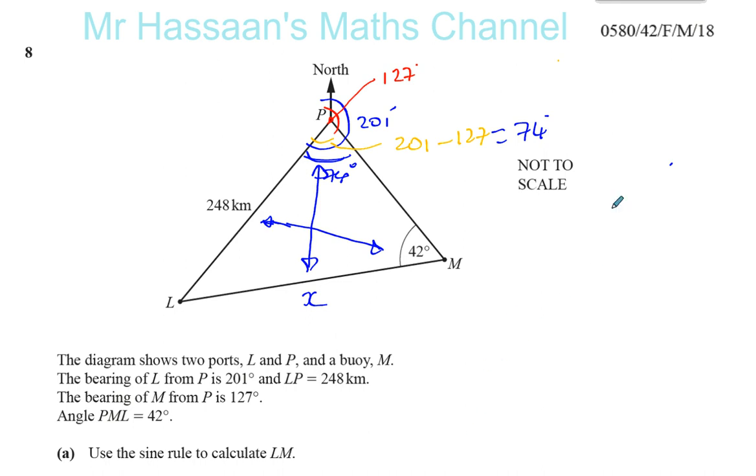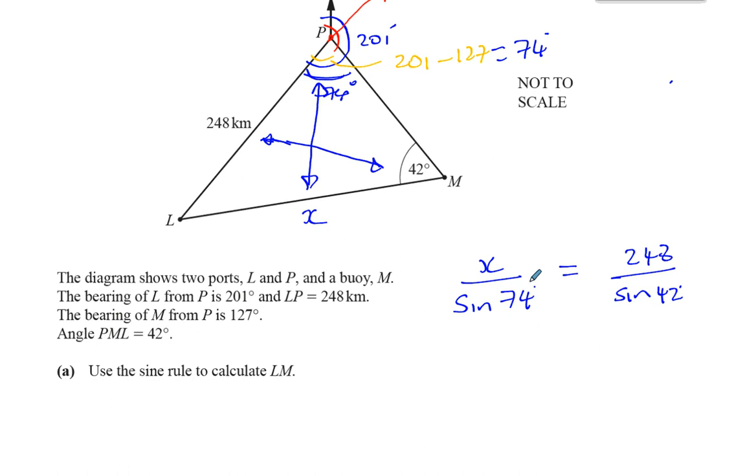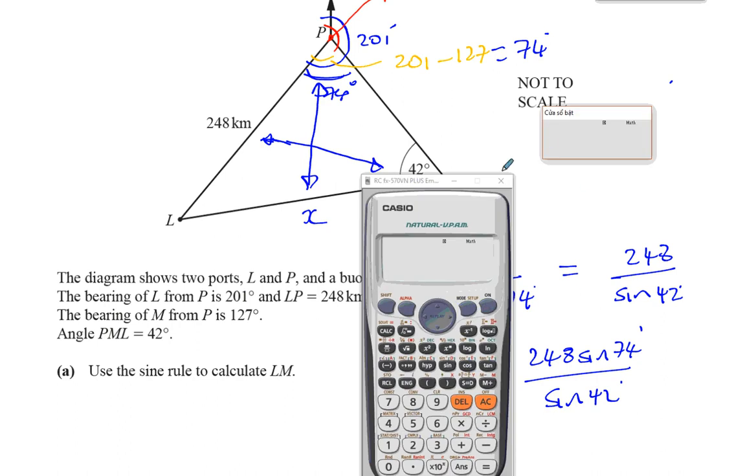So now I can use the sine rule. The sine rule states A over sine A equals B over sine B, or the other way around. The side divided by the sine of the angle opposite that side, so X over sine 74 should give me the same ratio as 248 over the sine of the angle opposite that, which is 42. This is true for any triangle. So we have X equals 248 times sine of 74 divided by the sine of 42.